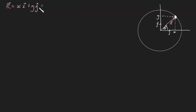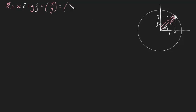Another equivalent way we could express this is using the standard notation (x, y) — this means the same thing by definition. We can also describe this yet another way in terms of the magnitude of our position vector. We can define lowercase r as being the magnitude of our position vector, and we can write this as (r cosine theta, r sine theta).